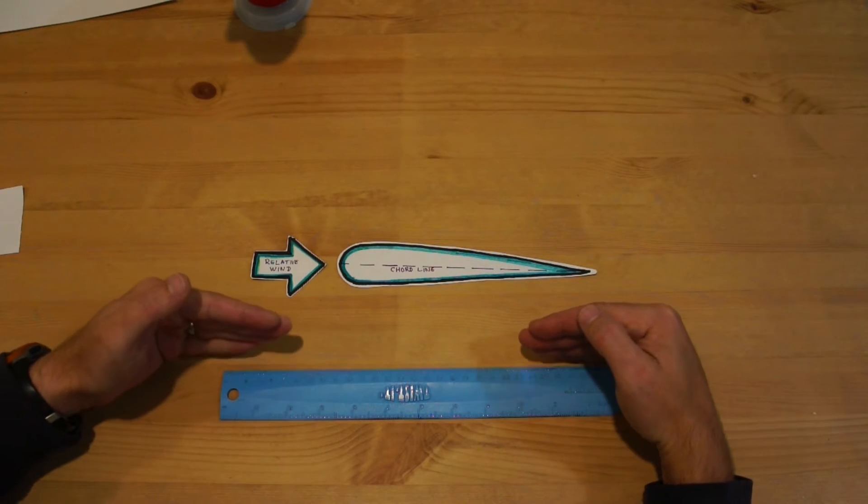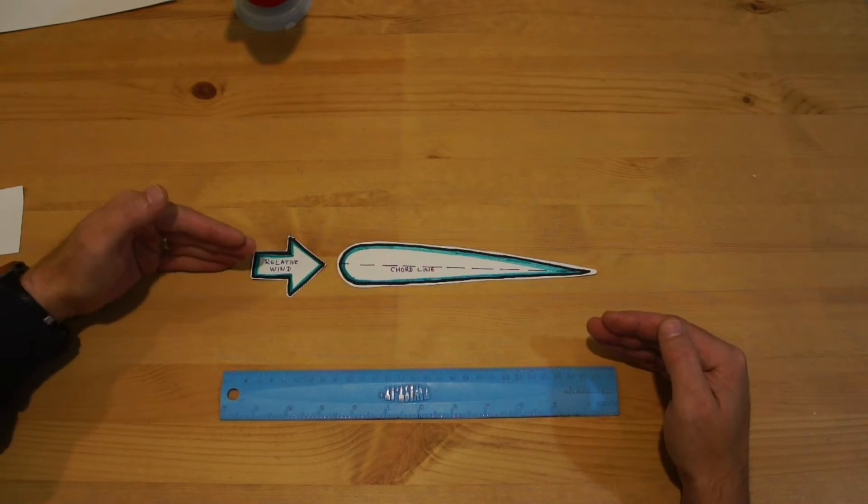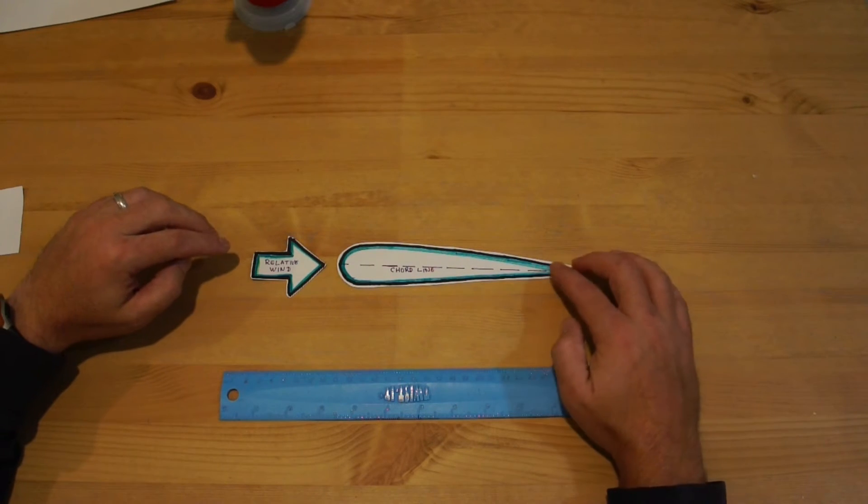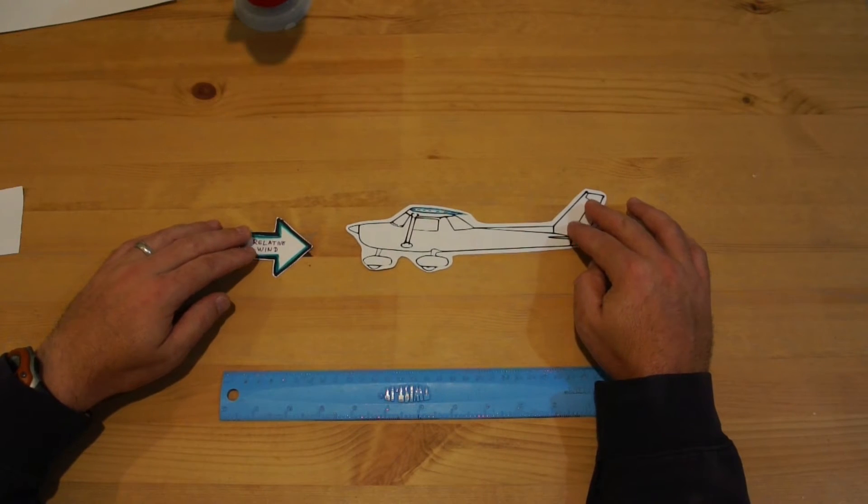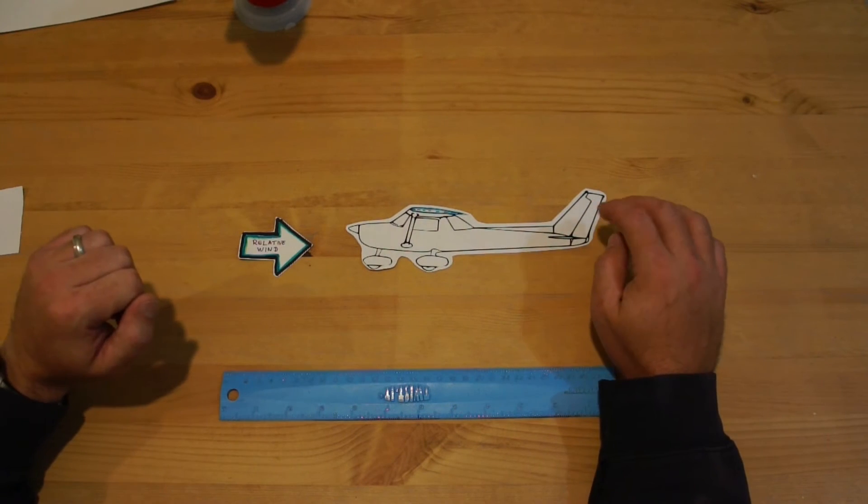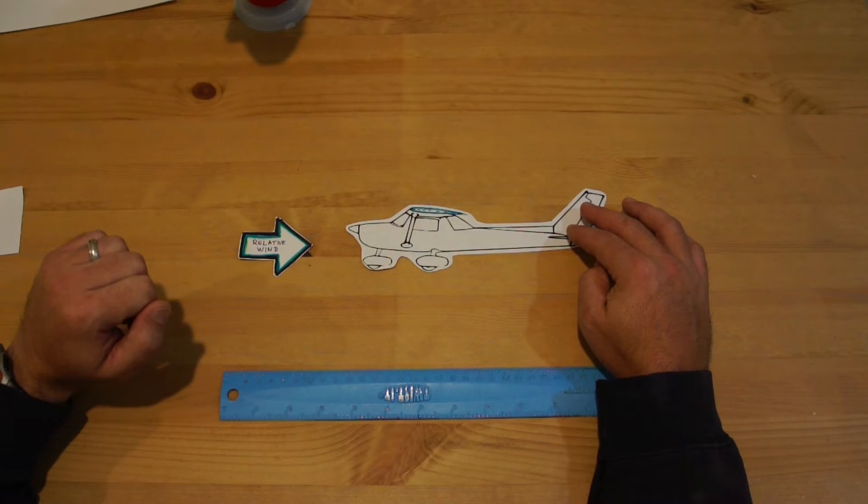If you're actually flying along straight and level with the cord line exactly parallel to the wind, you're probably not actually going to be flying too well. Most aircraft have a slight pitch as they're flying. Let's get this out of the way, we'll put our airplane in here so it makes it a little easier to follow along.